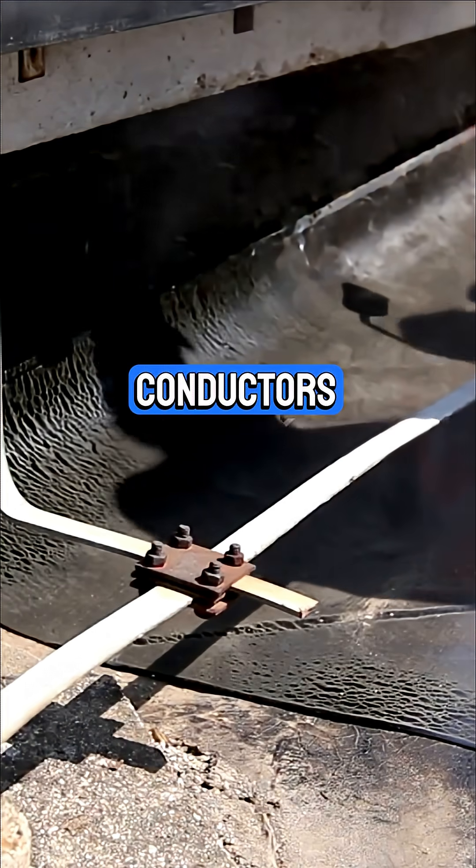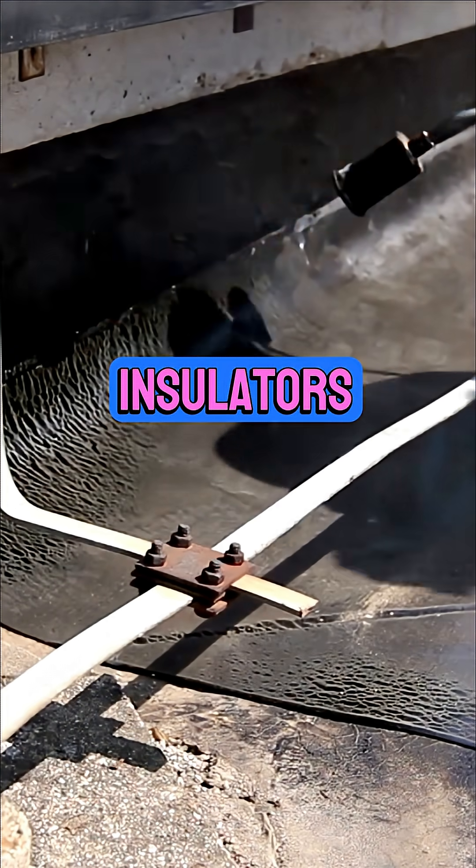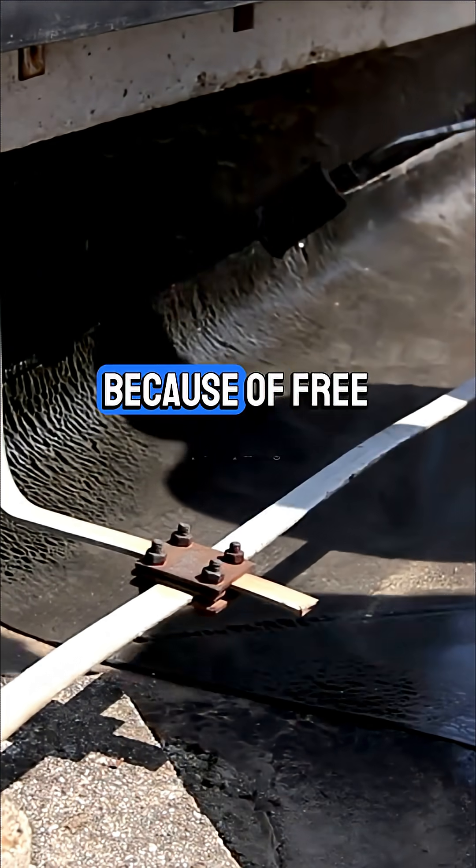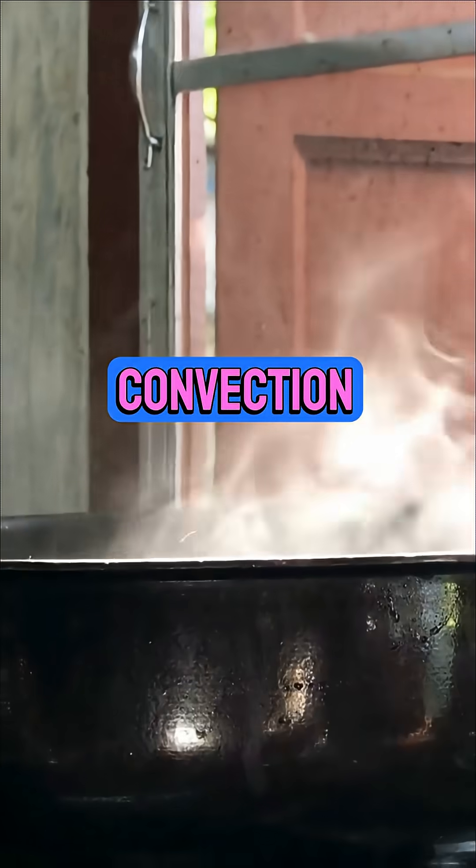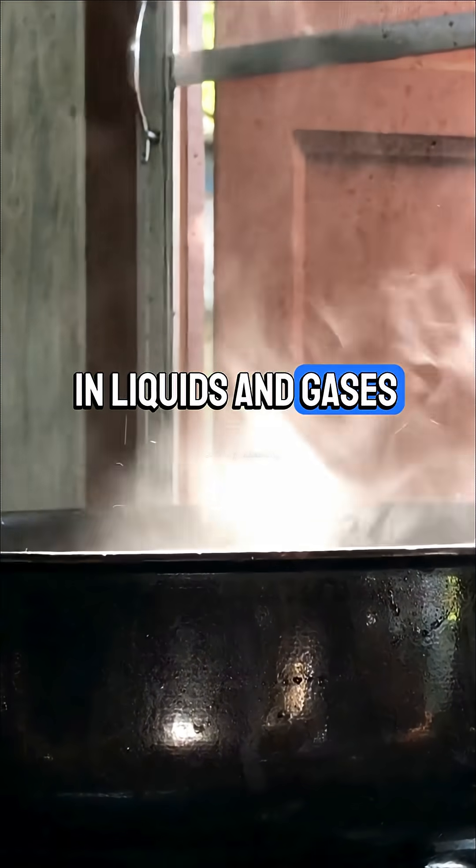Metals are good conductors, while wood and plastic are insulators. Metals conduct because of free electrons. Convection occurs in liquids and gases.